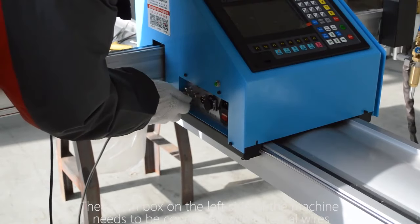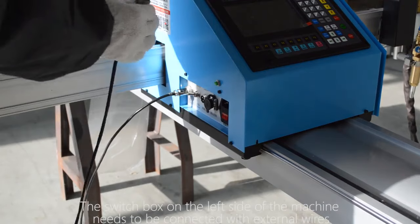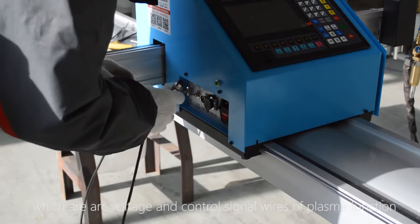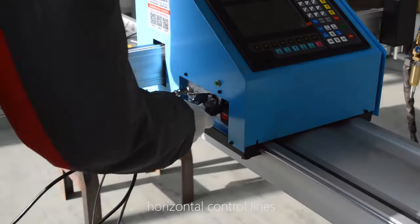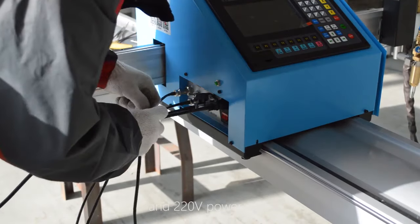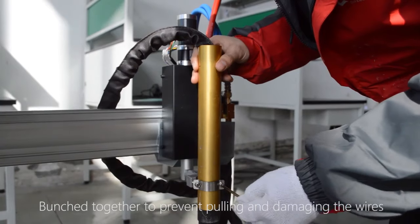The switch box on the left side of the machine needs to be connected with external wires which are arc voltage and control signal wires of plasma function, horizontal control lines and 220V power wires. Bunched together to prevent pulling and damaging the wires.